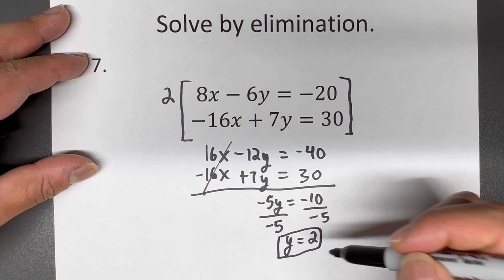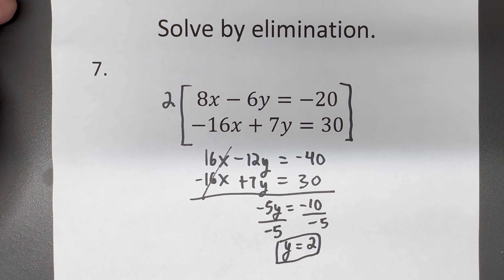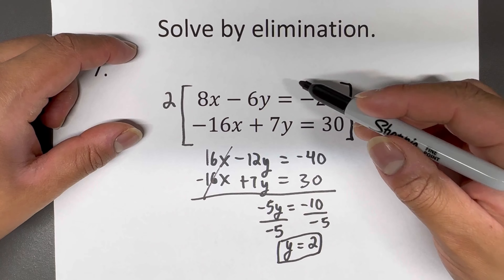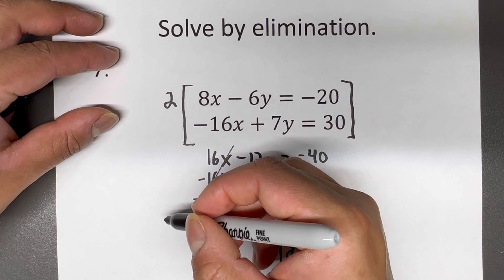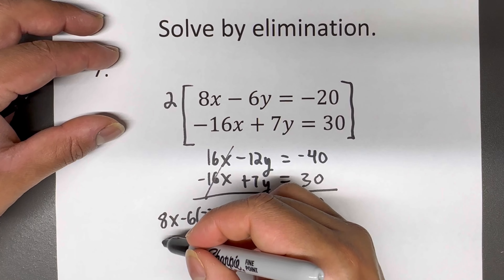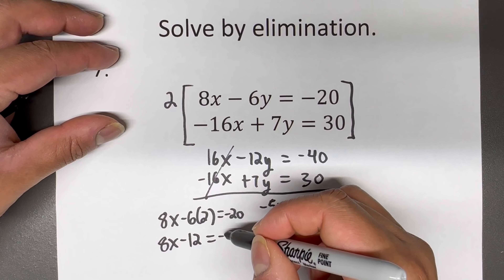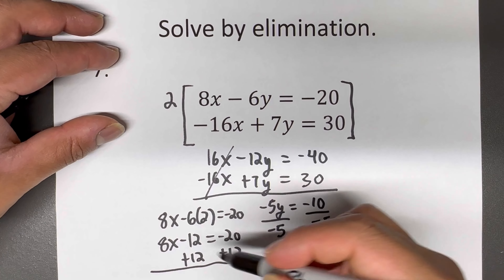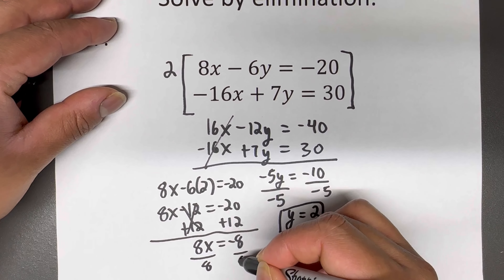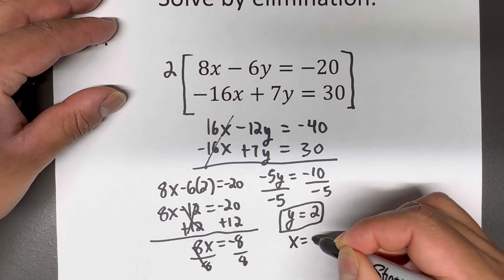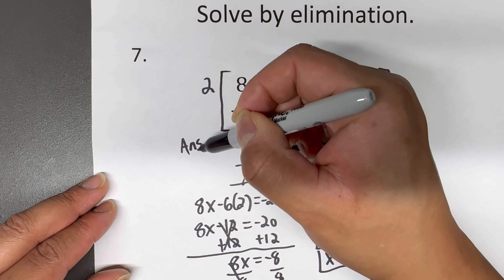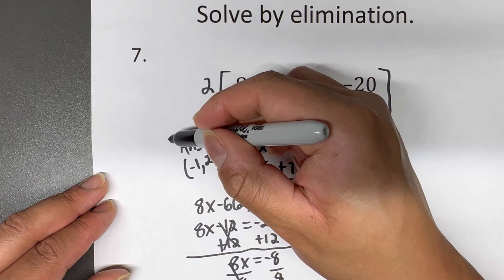We found the first piece of the solution. Now I plug Y equals two back into the top equation: eight X minus six times two equals negative 20, so eight X minus 12 equals negative 20. Adding 12 to both sides gives eight X equals negative eight, and dividing by eight gives X equals negative one. The solution is (-1, 2).